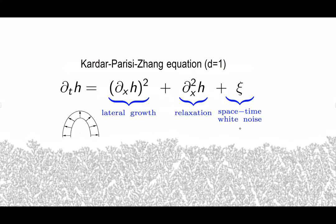Kardar, Parisi, and Zhang introduced their KPZ equation as a model for the ballistic aggregate and identified the three basic things driving the growth. There's a driving space-time white noise — a random kick independently at every space-time point — and there's a Laplacian term which is supposed to relax the interface. If you just look at those two terms, one tries to make the interface rough and the other tries to smooth it out; they balance each other and produce something which looks locally like a Brownian motion.